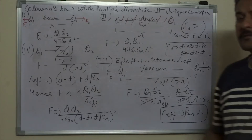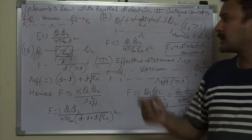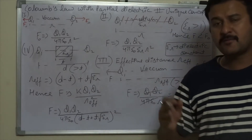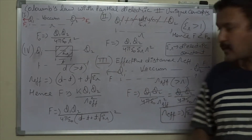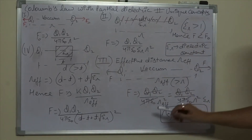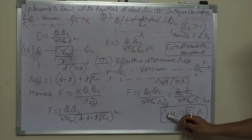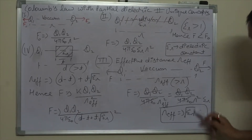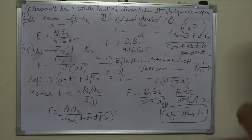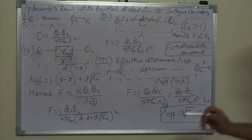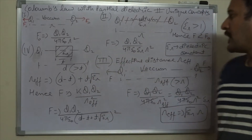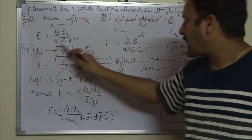Equating the two forces — the force acting initially with the medium and the new force with vacuum at distance R_effective — we get the result that R_effective = √εᵣ × R. Since εᵣ > 1, the square root of something greater than 1 gives a number greater than 1, so R_effective is indeed greater than R.